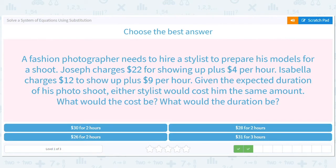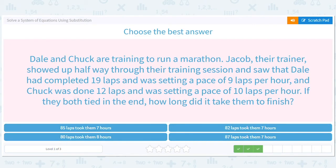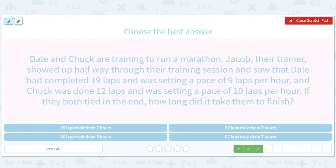Now, we would have to be careful if they ever had like 30 and 2. Like if they switched it, then we'd have to read more carefully. But they're not doing that, which is nice. So, 19 laps and was setting a pace of 9 laps per hour. So Y equals 9X plus 19. And Chuck was done 12 laps and was setting a pace of 10 laps per hour. So 10X plus 12.